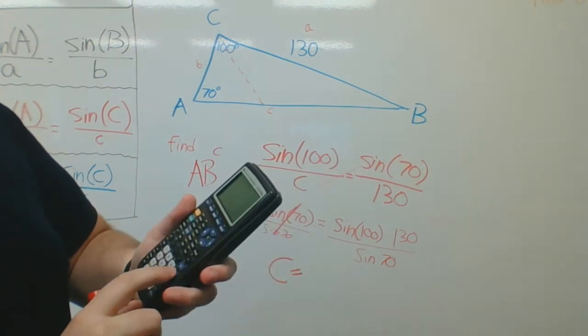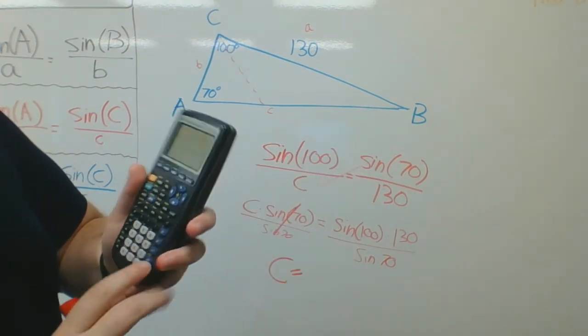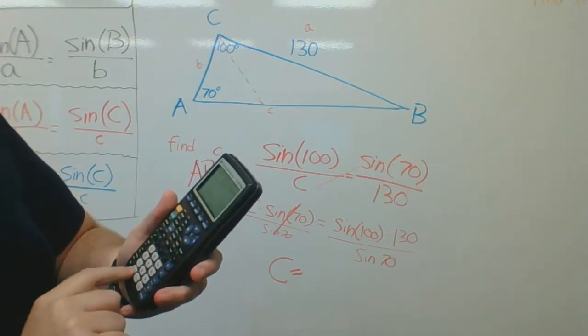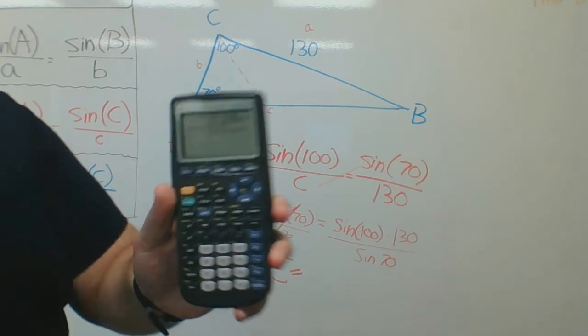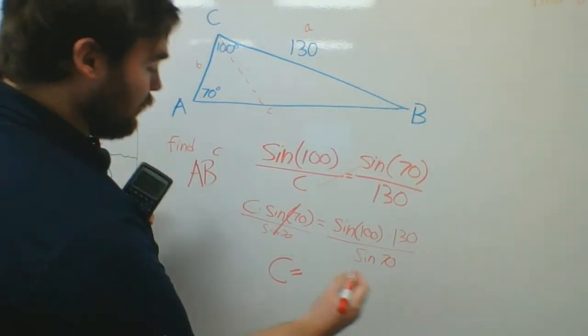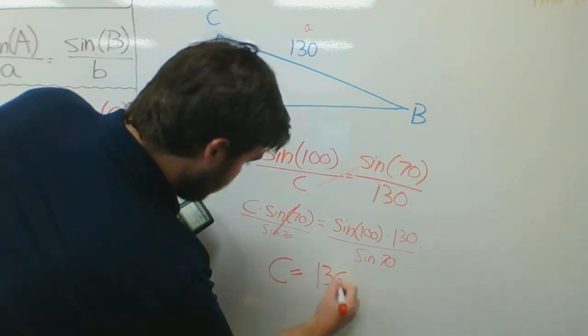So I can come here. I can go sine of 100 and parenthesis times 130. I'll do all that. Divided by sine of 70. When I do it in one step like that, I get my answer perfectly. So, this will be 136.24.